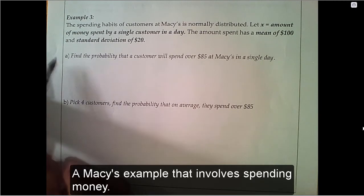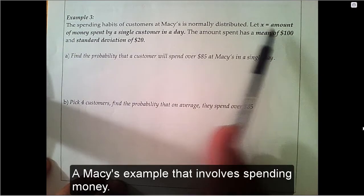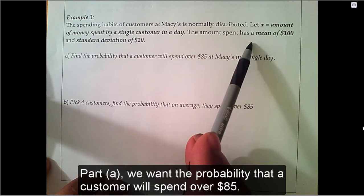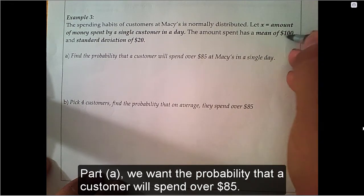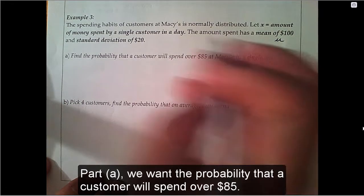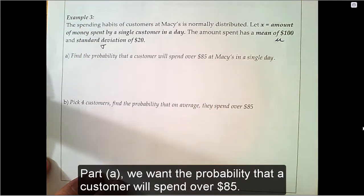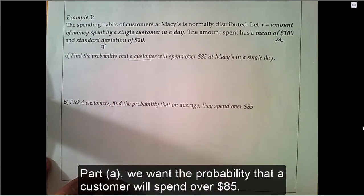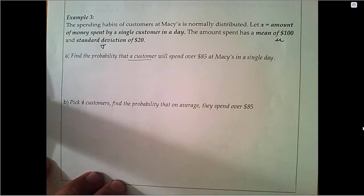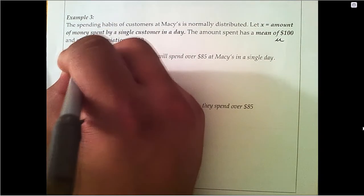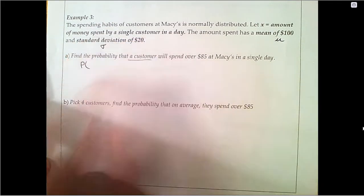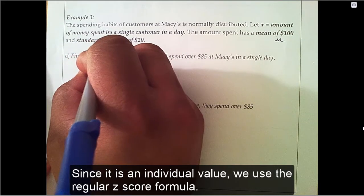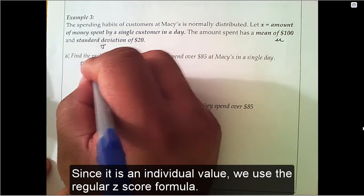A Macy's example that involves spending money. Part A: We want the probability that a customer will spend over $85.00. Since it is an individual value, we use the regular z-score formula.